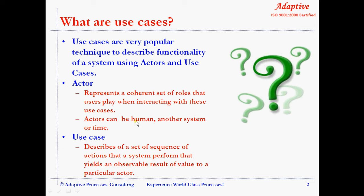Actors can be a human being, another system, or time. A use case describes a set of sequence of actions that a system performs, which yields an observable result of value to a particular actor.